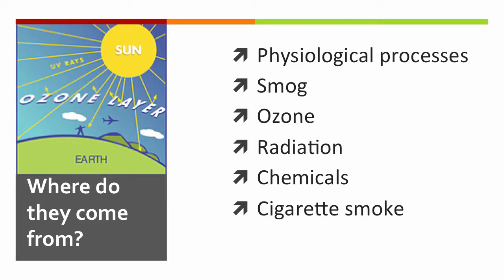Free radicals are created by normal physiological processes inside our body, but they may also be created by environmental conditions. Certain environmental conditions that cause free radical formation are smog, ozone, radiation, chemicals, and cigarette smoke.